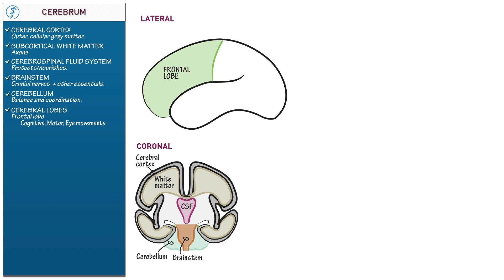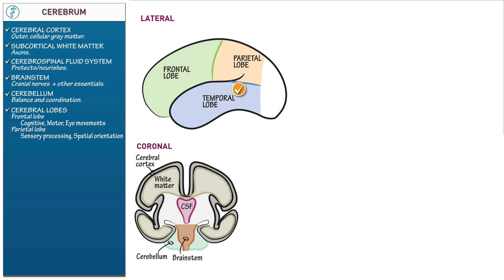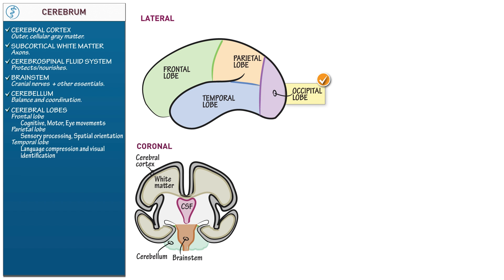Superior posterior is the parietal lobe, responsible for sensory processing and spatial orientation — it guides us through our environment. Inferior is the temporal lobe, responsible for language comprehension and visual identification; it stores visual, auditory, olfactory, and other forms of information. Posterior is the occipital lobe, primarily known for visual reception and processing. Even a large occipital stroke will mostly only manifest with vision loss because of this area's dedication to vision.